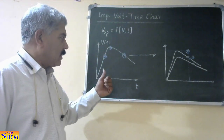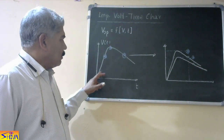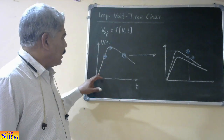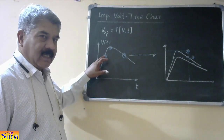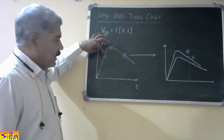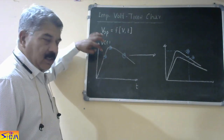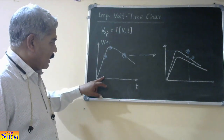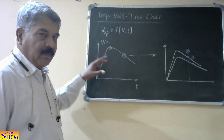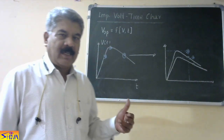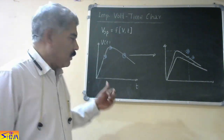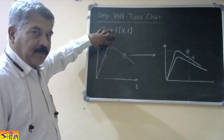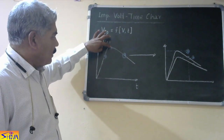Let us see how the points are marked on this characteristic. First possibility: spark over takes place on the rising portion — the wave front. In that case the point of spark over is noted. If spark over takes place at a certain point on the wave front, then on the characteristic that point is plotted. It indicates the insulation sparks over at that peak value — meaning the insulation can sustain that voltage value for that much time. We draw a vertical line to give the time and a horizontal line to give the spark over voltage. Second possibility: spark over occurs at the peak value. When spark over occurs at the peak value, we know that point — this indicates the spark over voltage and the time for which the insulation can sustain.